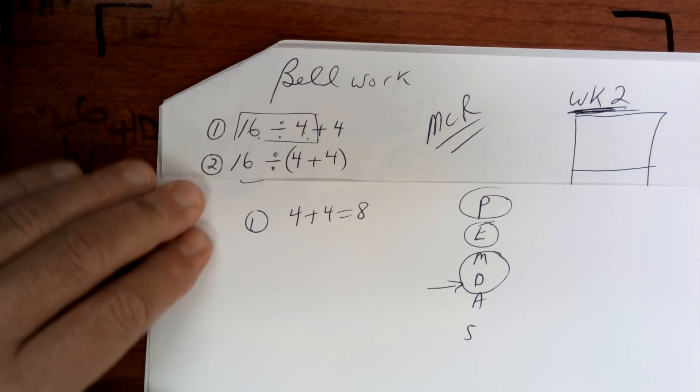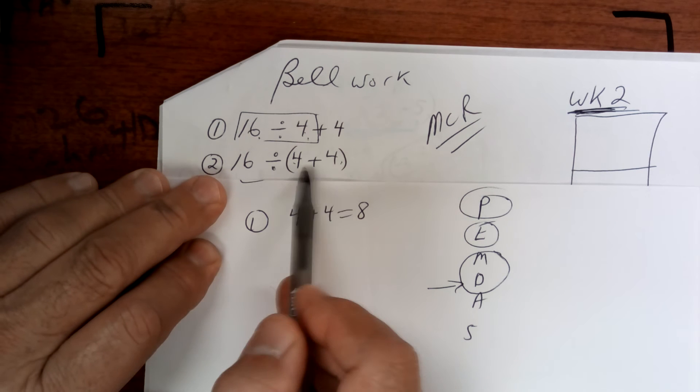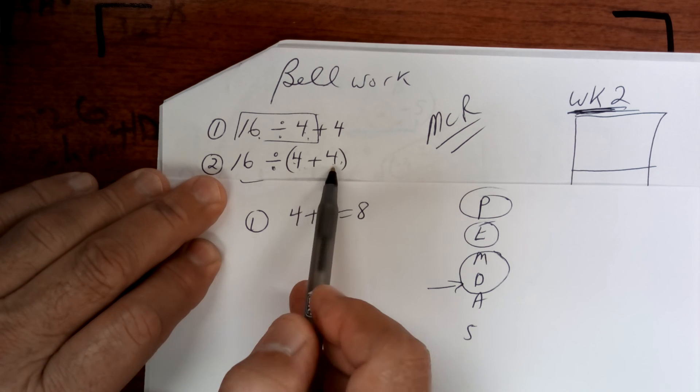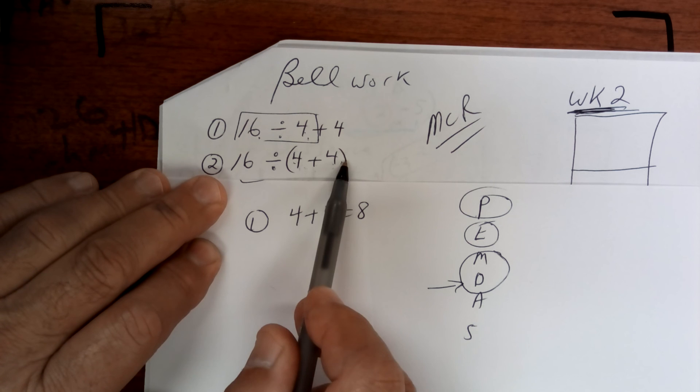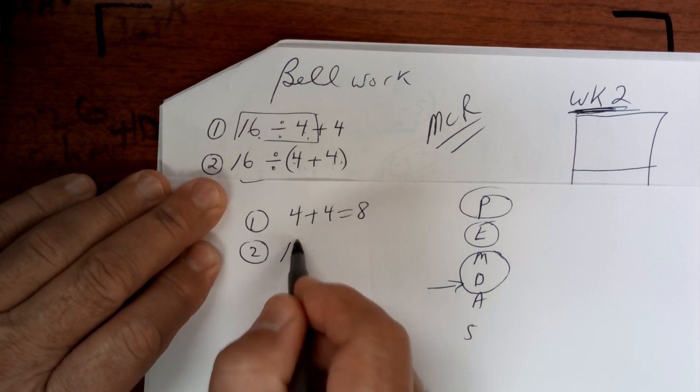But look at the difference on number 2. Number 2 has parentheses, so you've got to do that first, even though it's addition. Parentheses is way up here. So 4 plus 4 is 8.